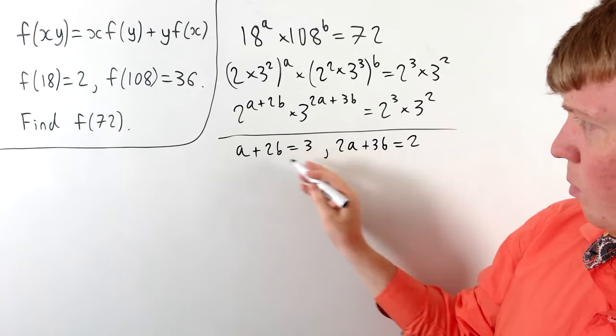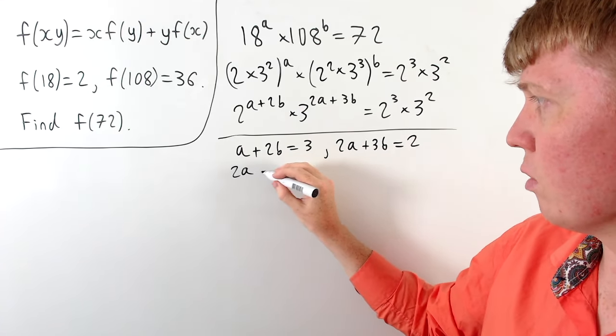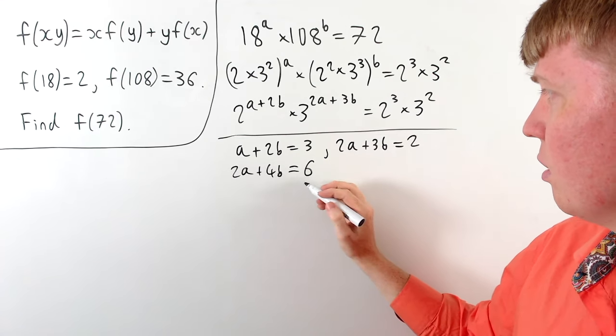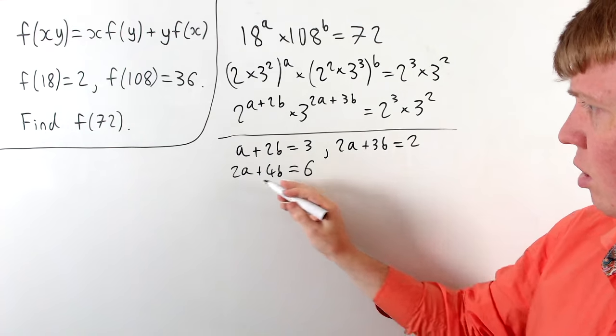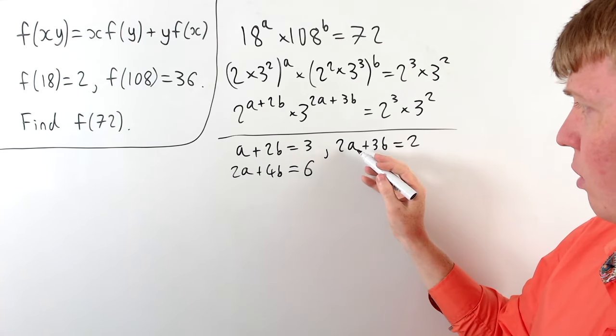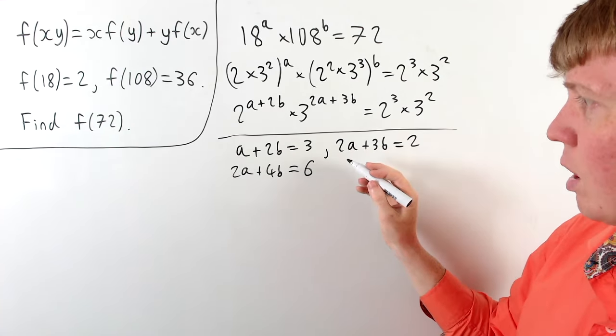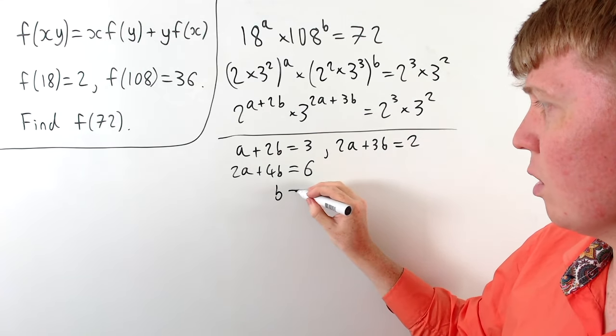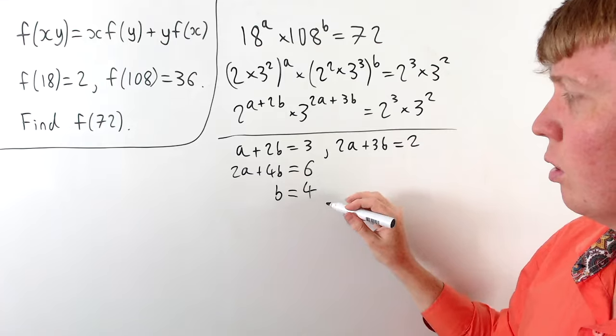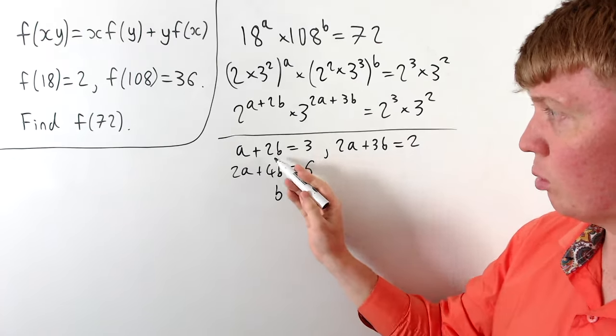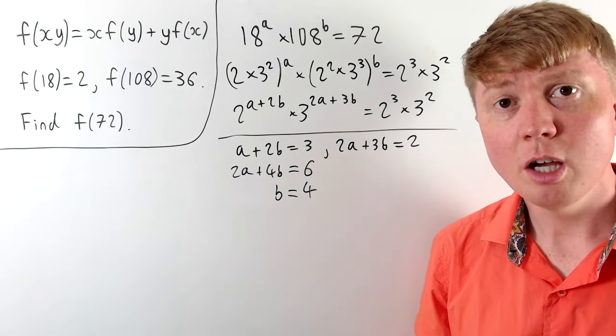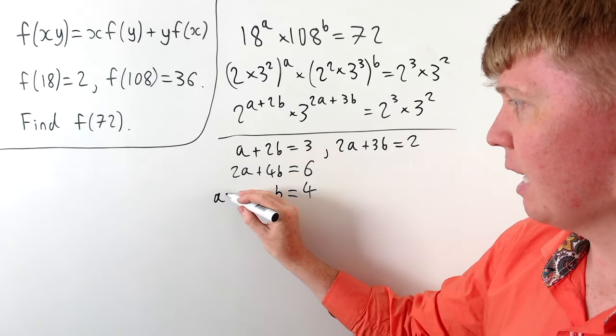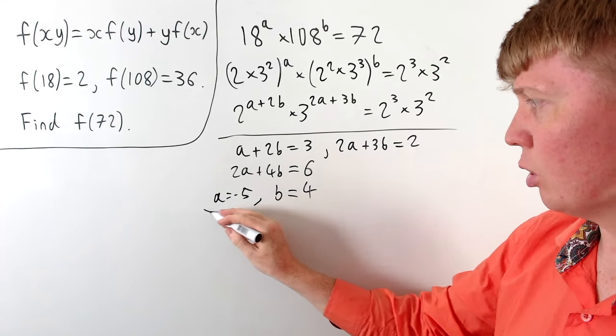So then we can multiply both sides of this equation by 2 to give us 2a plus 4b equals 6. And then you can see comparing the different equations we've got 2a plus 4b equals 6. We could subtract this equation now, taking away the 2a, the 3b and the 2. And we see that b is equal to 4. Then once we've got the value b is 4 we can substitute this into either of our original equations. We get a is negative 5. So we've got a is negative 5 and b equals 4.